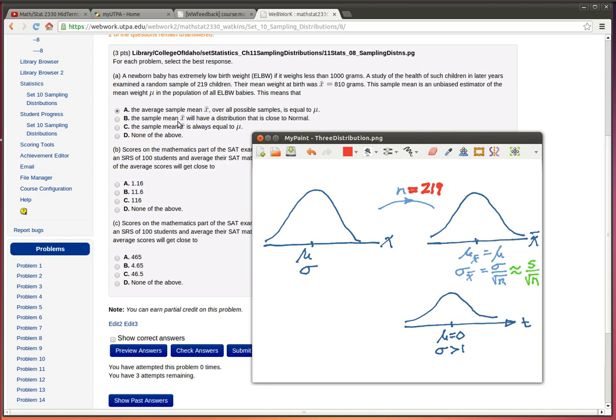Now the sample mean x-bar will have a distribution that is close to normal. That's true under certain conditions, but we need to know some more assumptions about this original population. So that's why I'm choosing A instead of B in that case.